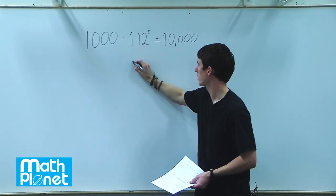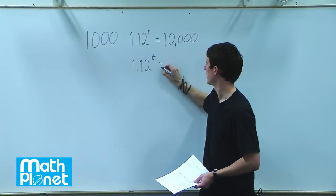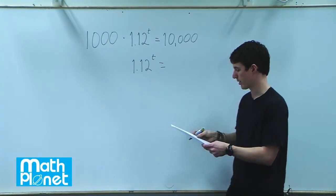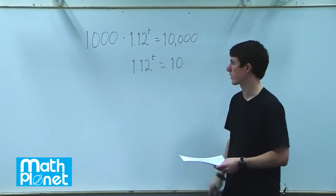So that gives us 1.12 to the power of t equals 10,000 divided by 1,000 is just 10. So it's already simplified a little bit.